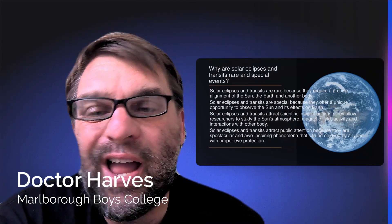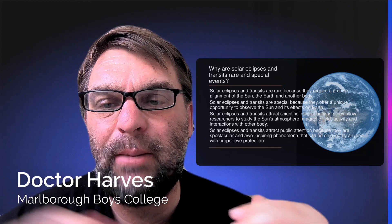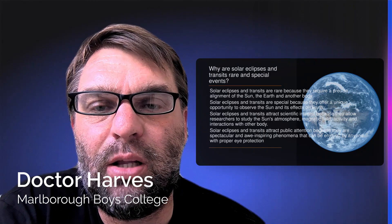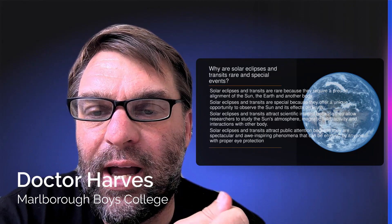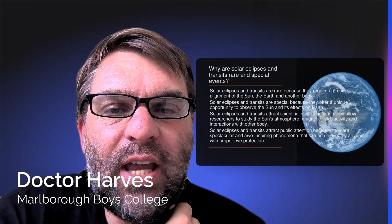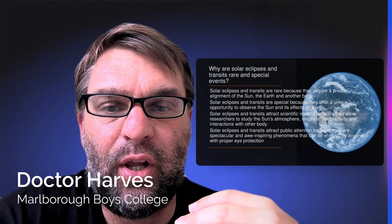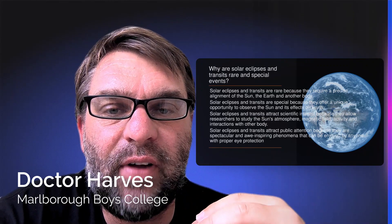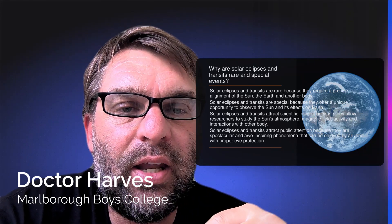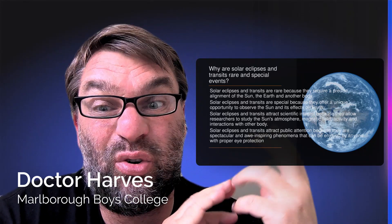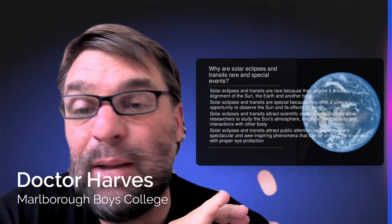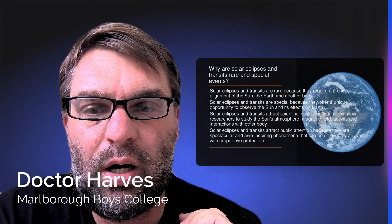Why are they rare and special? It's because they require syzygy — the alignment of the Sun, the Earth, and that particular other celestial body, be it another planet, a comet, or an asteroid. They give us an opportunity to observe the Sun and its effect on the Earth, which is why there's lots of excitement amongst scientists when they occur. They also attract lots of public attention because they're very spectacular and can be enjoyed by anybody on Earth given the proper eye protection.